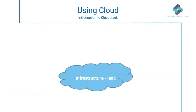Cloud computing services are typically provided in three different models. The first is Infrastructure as a Service (IaaS). This is the most basic cloud service model. Under this model, the cloud provider offers computers — physical and more often virtual machines — and other resources. IaaS refers to online services that abstract the user from the details of infrastructure like physical computing resources, location, data partitioning, scaling, security, backup, etc.